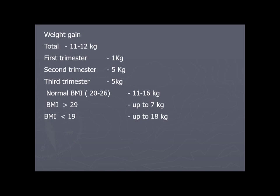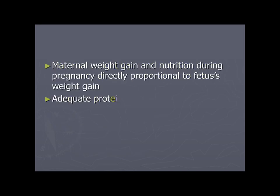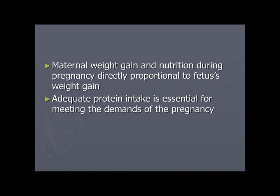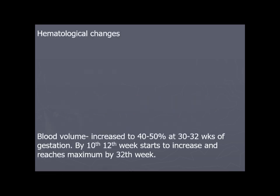Weight monitoring is important because rapid weight gain may indicate pathological conditions such as pregnancy-induced hypertension, edema, or kidney problems. Stationary or falling weight may indicate IUGR. Weight gain and nutrition during pregnancy are directly proportionate to fetal weight gain. Adequate nutrient intake is essential for meeting the demands of pregnancy. BMR increases up to 30% higher depending on pre-pregnant health status.